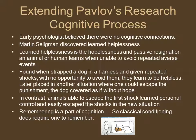Later, when placed in a situation where they could escape — the harness was removed but there was a small board they had to leap over — the dog cowered as if there was no hope of escape. They had simply learned to give up. In contrast, animals that were able to escape the first shock learned personal control and that they can escape any situation. This is part of cognition because they had to remember when they were able to escape. This happens in school systems too — a kid told over and over they're a failure eventually starts thinking they can never do it; they learn helplessness.